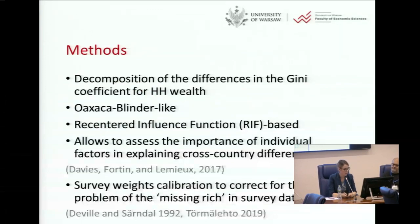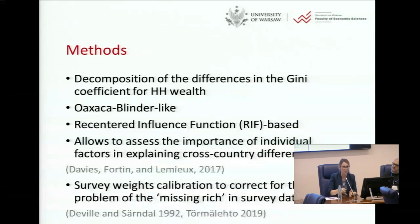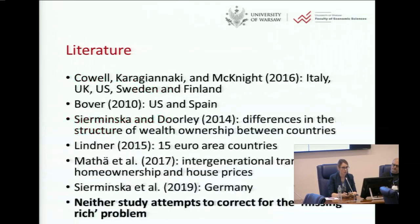Regarding survey weight calibration: we don't impute any data. We just have totals and calibrate weights. This relies on the strong assumption that the distribution of covariates among the missing rich is the same as among the non-missing rich — those we have in the data. I admit this is a strong assumption, but it is the best we can do. We are not the first to perform cross-country wealth decompositions, but existing studies focus on the Western world, and neither attempts to correct for the missing rich problem.